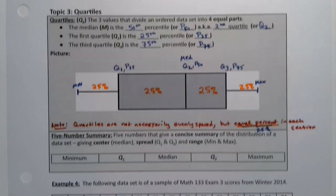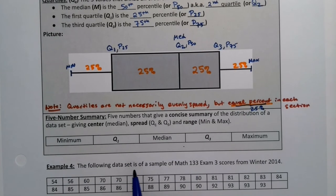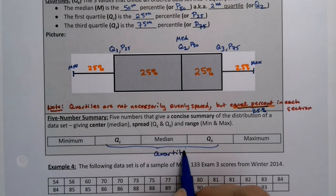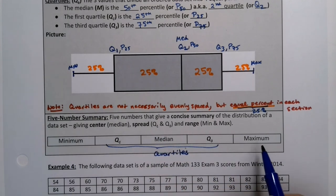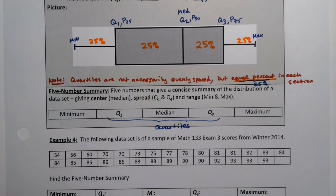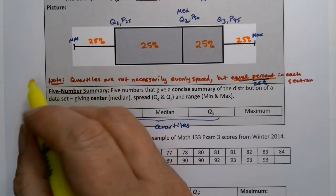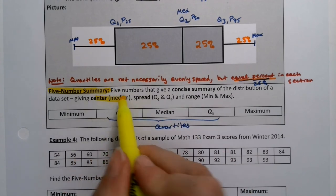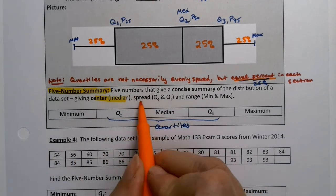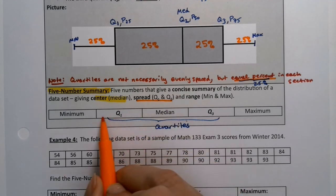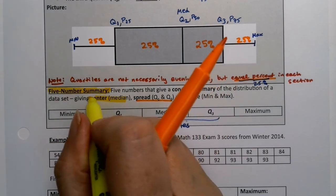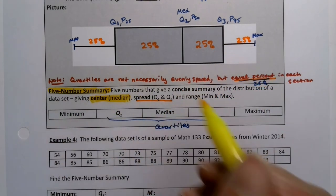Now if I take the quartiles together along with the minimum and maximum. So these three are the quartiles, the three quartiles and the min and the max, I've done something called the five number summary. Now the five number summary is really nice because it's a concise way to give a distribution. It shows the center, which is the median. It shows the spread, which is technically the distance from Q1 to Q3. We'll get more into that later. It's got a name, it's called the IQR.